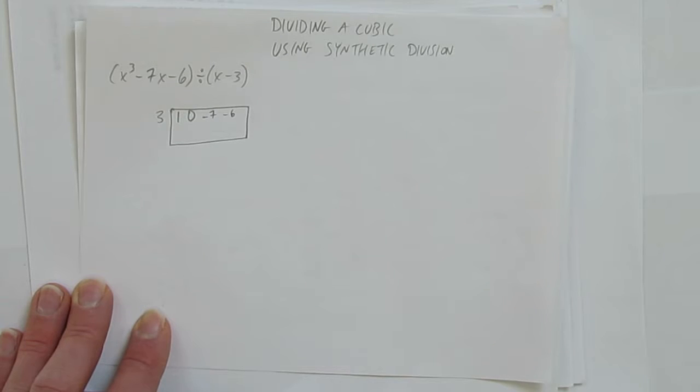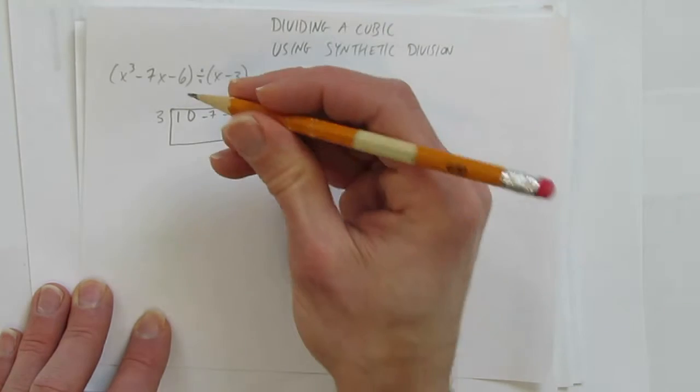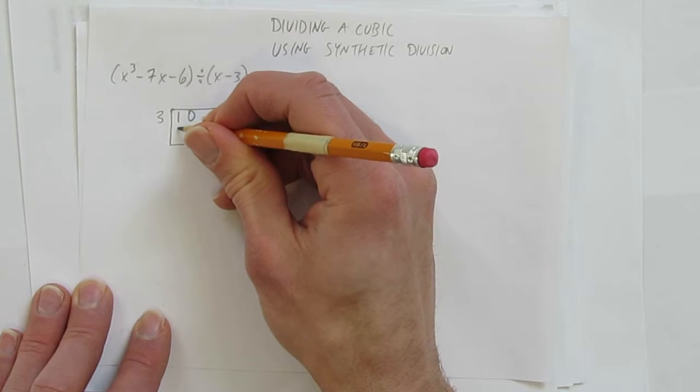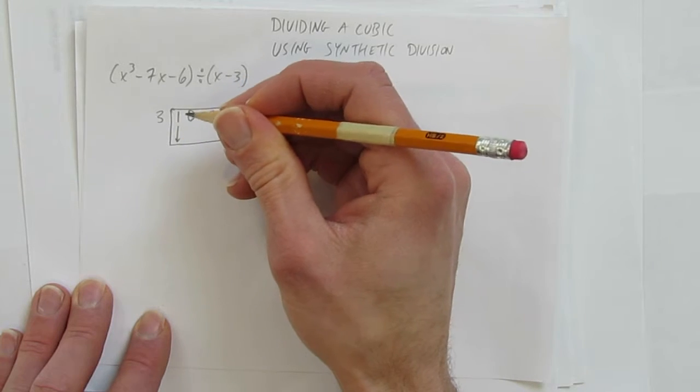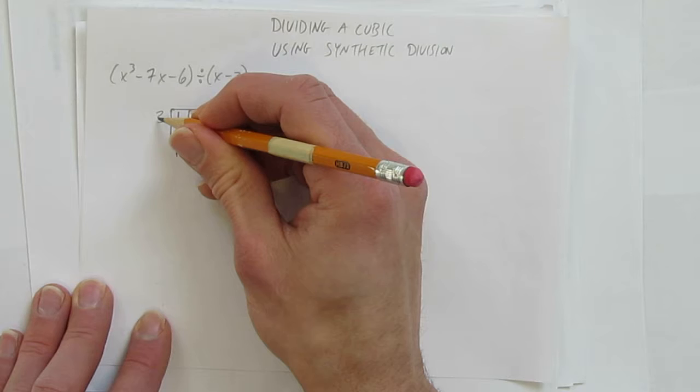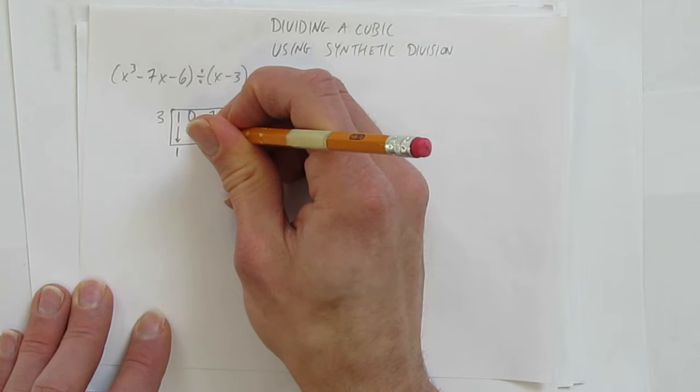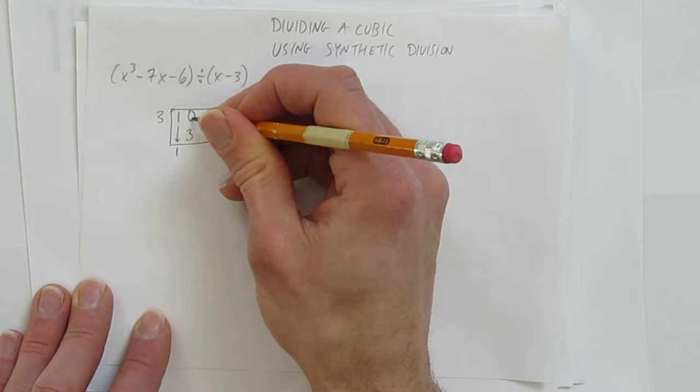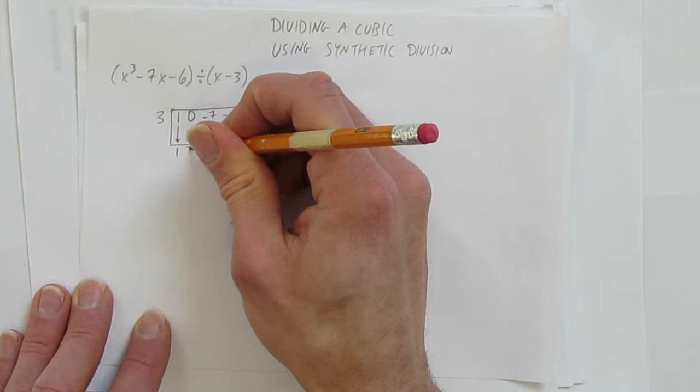And now let's do synthetic division. Here's how it works. Start by bringing down the first coefficient. Just comes down. Write it here. Next step, multiply. 3 times 1 is 3. Now add. 0 plus 3 is 3.